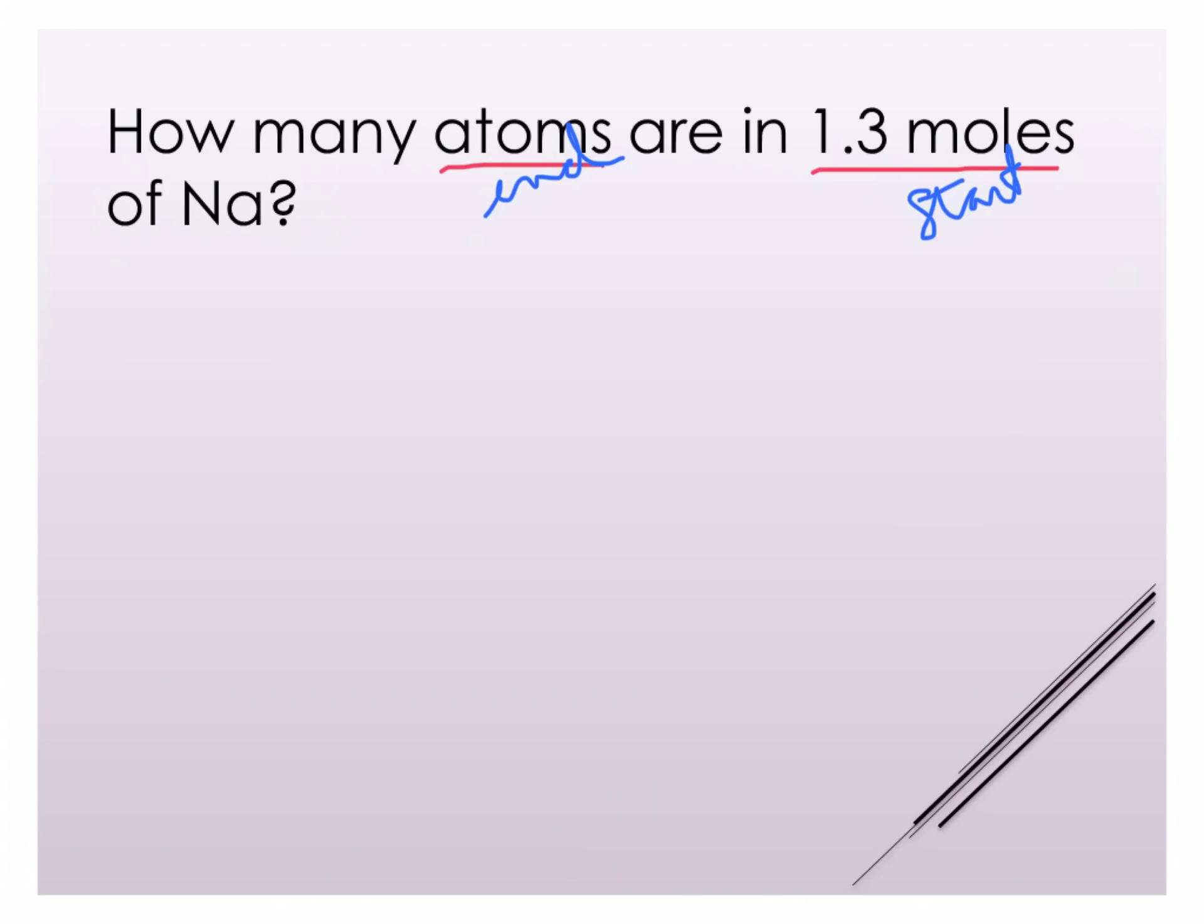And what we're worried about is what relationships do I know between atoms and moles? Now this is actually independent of the substance we're talking about, but we know that one mole contains 6.022 times 10 to the 23rd atoms. Remember mole is just a counting number, just like a dozen. The number just happens to be a little bit bigger.